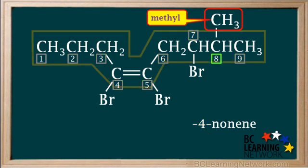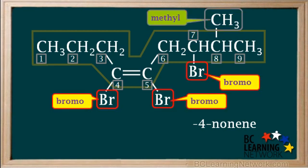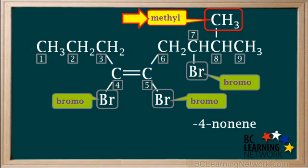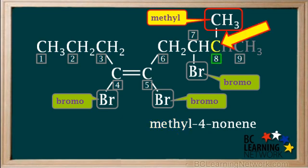Now we'll look at the groups attached to the longest continuous chain. There is a methyl group on carbon eight, and there are three bromo groups. Group names are sorted alphabetically, so bromo comes before methyl in the name. Since methyl comes last, we write methyl just before the dash-four-dash in the name, and we must specify that the methyl group is on carbon number eight, so we write eight in front of the methyl.